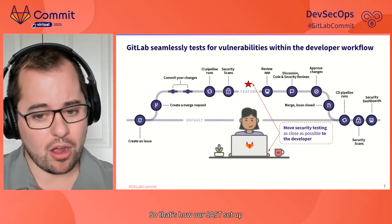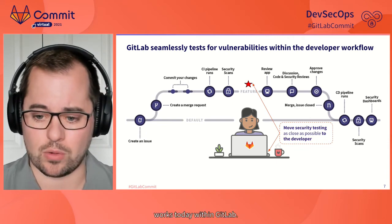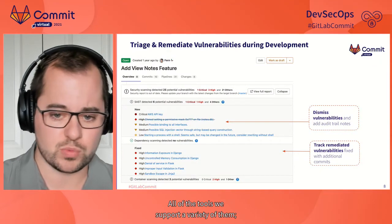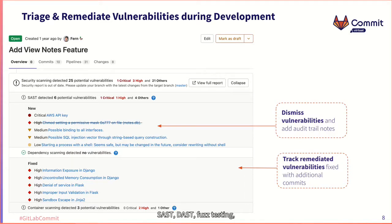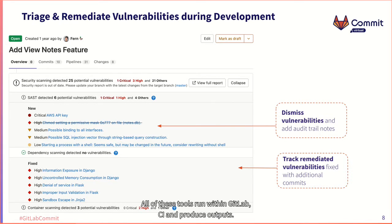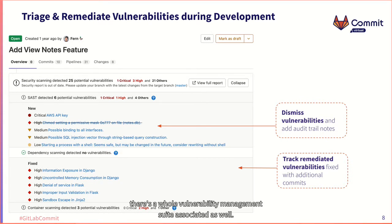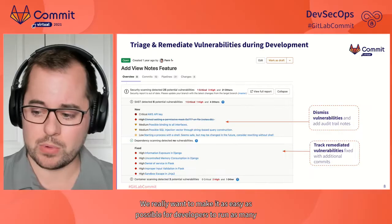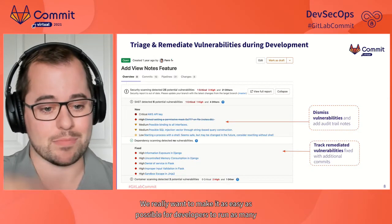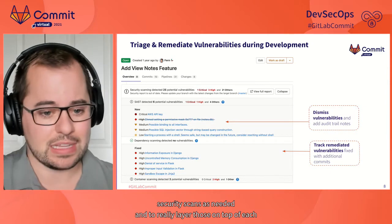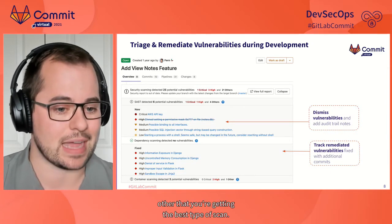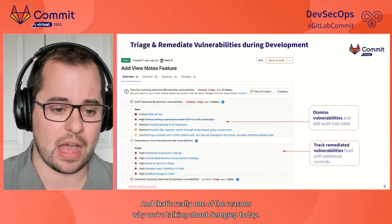So developers can clearly understand: 'I made this code change and I introduced this vulnerability — I need to go remediate that.' That's how our SAST setup works today within GitLab. We support a variety of tools: SAST, DAST, fuzz testing, secret detection, composition analysis, and dependency scanning. All of these tools run within GitLab CI and produce normalized outputs so you can triage and remediate vulnerabilities. There's a whole vulnerability management suite, and all of that is built in with our security scanning tools.